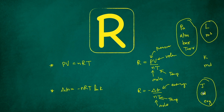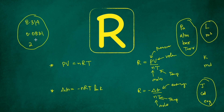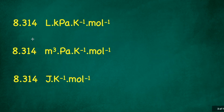Let me tell you the different values of R you will come across. The three major values are either 8.314, or 0.0831 (also written as 0.0821), or approximately 2. Let's see what units correspond to each of these values and when you need to use a particular one.